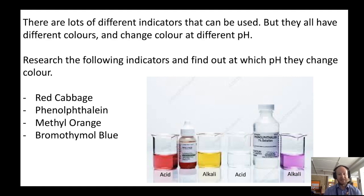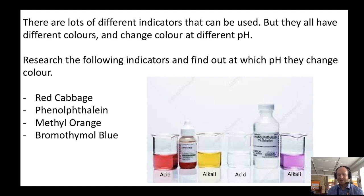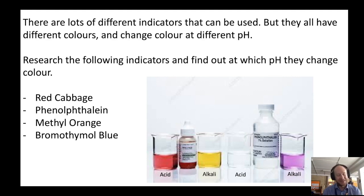We use lots of different indicators in science, but they all have different colors and change color at different pHs — no two indicators are exactly the same. I'd like you to research the following indicators and find out at which pH they change color. For the red cabbage indicator, I've given some instructions on how to do this experiment at home, so please try to persuade your parents to let you do some science. I'm very excited to see what you end up making!